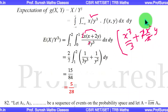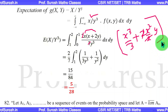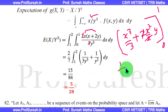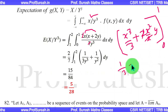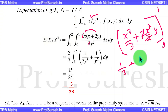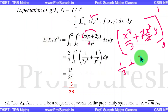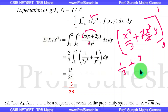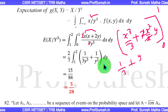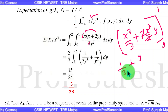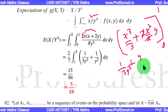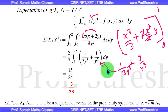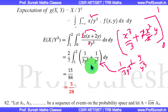We take the limit with respect to x. After substituting the limits, we simplify the expression involving y. One y cancels, giving us the remaining integral: (1/(3y³) + 1/y²) dy, which is then integrated with respect to y from 1 to 2.